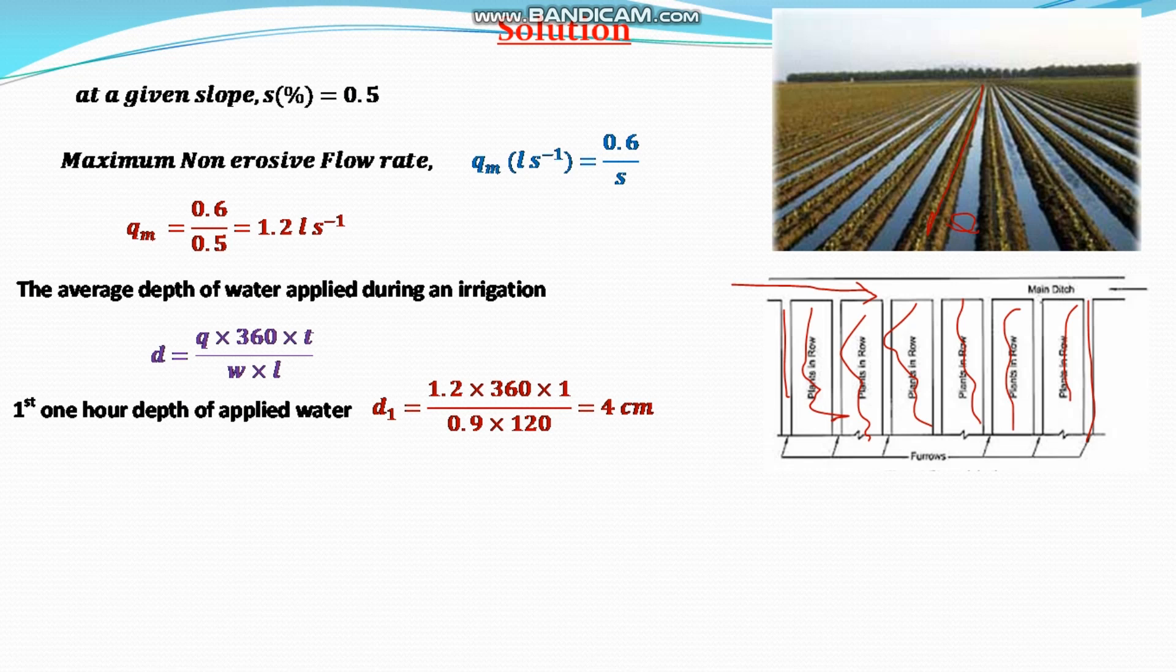Next, the stream is made into half or reduced to half, and it is again irrigated for another one hour. Therefore, in the second hour, depth of applied water with half flow rate, which is 1.2 initial flow rate or non-erodible maximum flow rate divided by 2, that is 0.6 liter per second, is applied again.